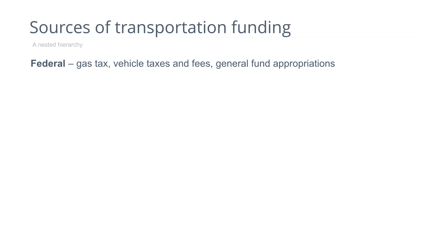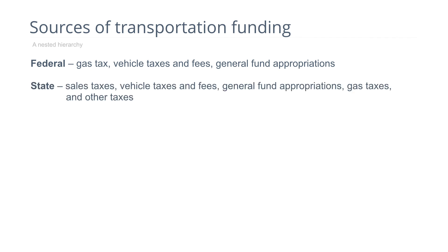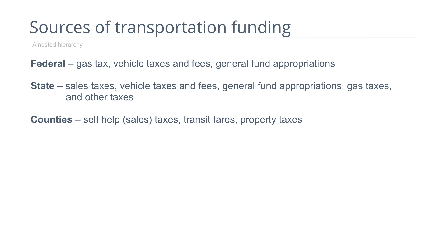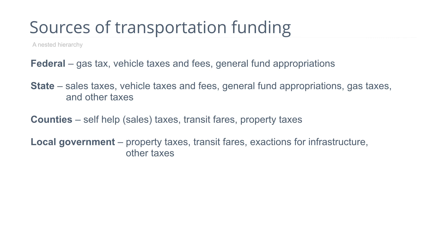The primary funding mechanism at the federal and state level is gasoline taxes — excise taxes charged on a per gallon basis. Federal and state governments also use vehicle taxes and fees, appropriate funds from the general fund, and use other taxes. Counties increasingly use self-help taxes, which are local sales taxes devoted to transportation, as well as transit fares and property taxes. Local government uses property taxes, fares from transit systems, exactions for infrastructure, and other taxes to fund the transportation system.